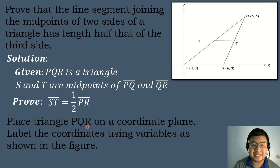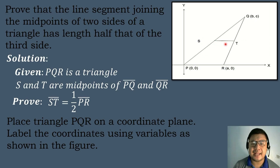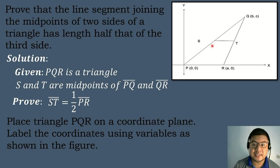We have already placed triangle PQR on a coordinate plane, where point P is at the origin (0, 0), point R has coordinates (A, 0), and point Q has coordinates (B, C). To prove that segment ST is one half of segment PR, we will find the coordinates of points S and T using the midpoint formula.